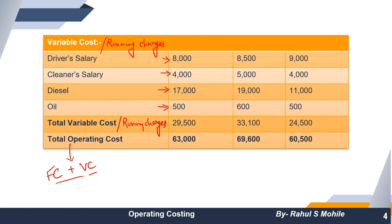When we add the standing charges and running charges together, what we get is the total operating cost. This is a very simple and easy-to-understand statement. Whatever points are given in the question, we simply bifurcate them into two types of cost: number one, standing charges, and number two, running charges.